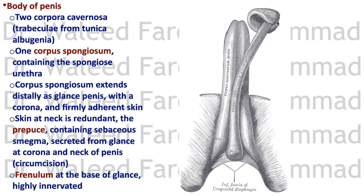Lower down on the glans is the frenulum, the same as in the clitoris, at the base of the glans, and it is highly innervated. So we have the corpora cavernosa and the corpus spongiosum, with the corpus spongiosum extending into the glans penis, with a prepuce and a frenulum.